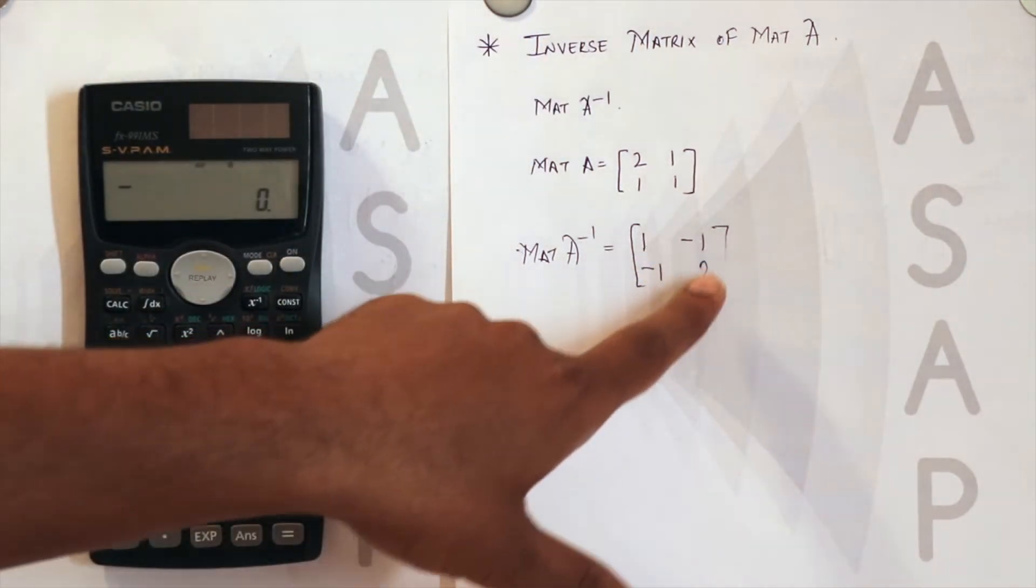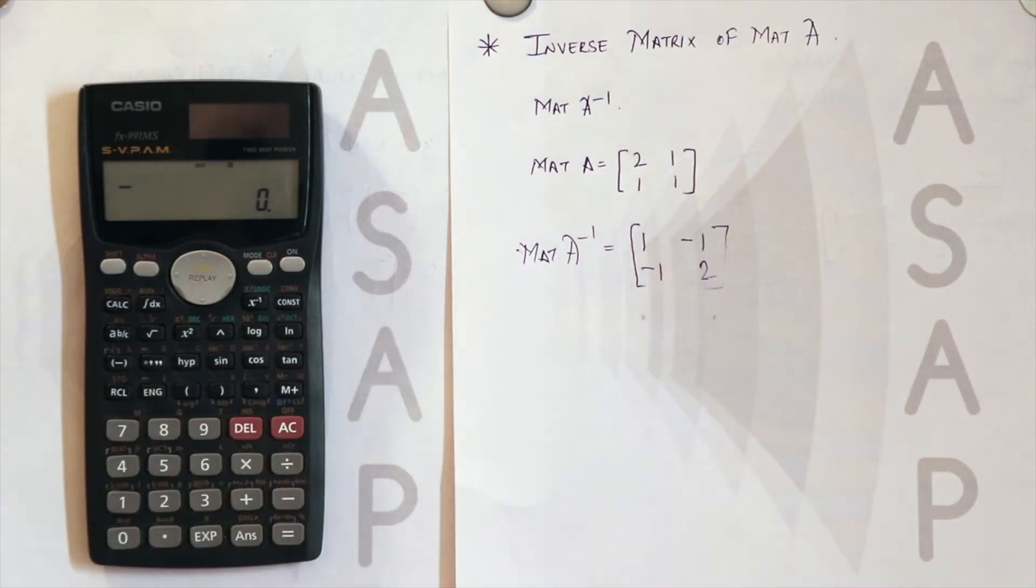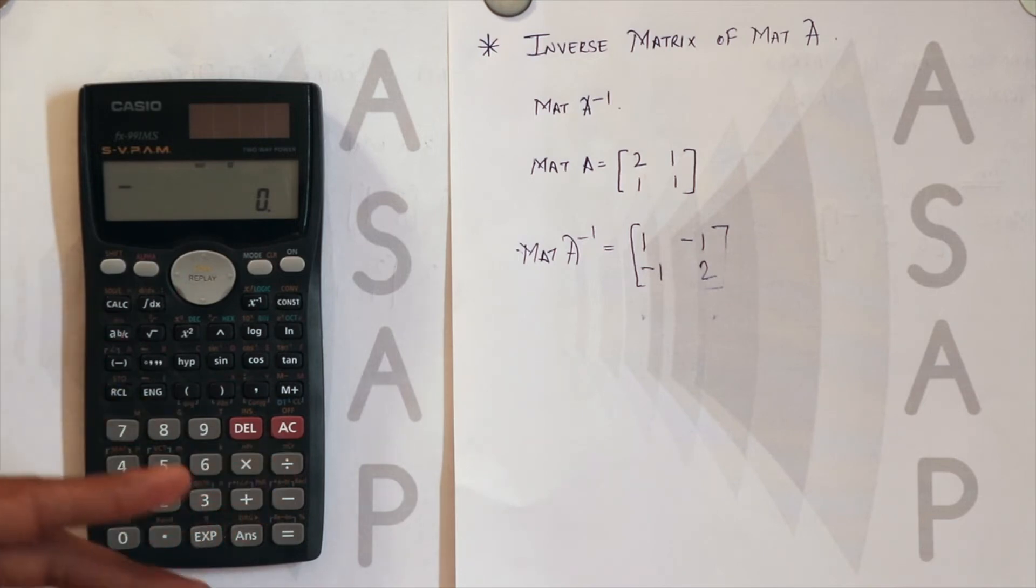You may find this time-consuming on the calculator for a 2 by 2 matrix, but if you need to find the inverse of a 3 by 3 matrix, then it is pretty handy because in a single step, just entering the matrix and using this x raised to minus 1 option, you will get the answer.